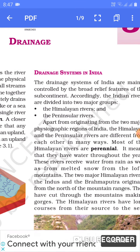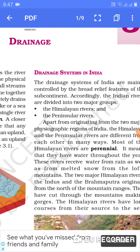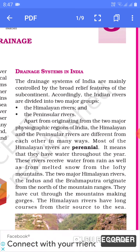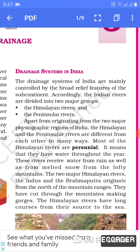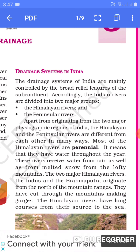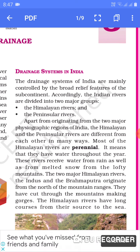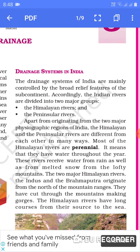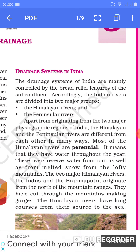Now, drainage system in India. Bharat mein jo nadiyon ka system hai, the drainage system of India is mainly controlled by the broad relief features of the subcontinent. Accordingly, the Indian rivers are divided into two major groups: the first one is Himalayan rivers, and the second is Peninsular rivers.